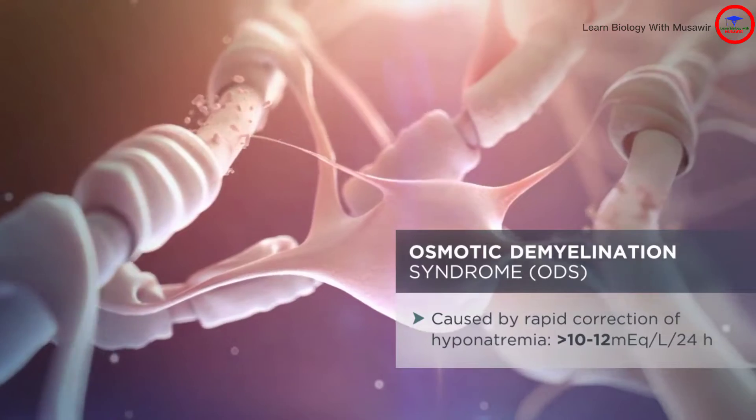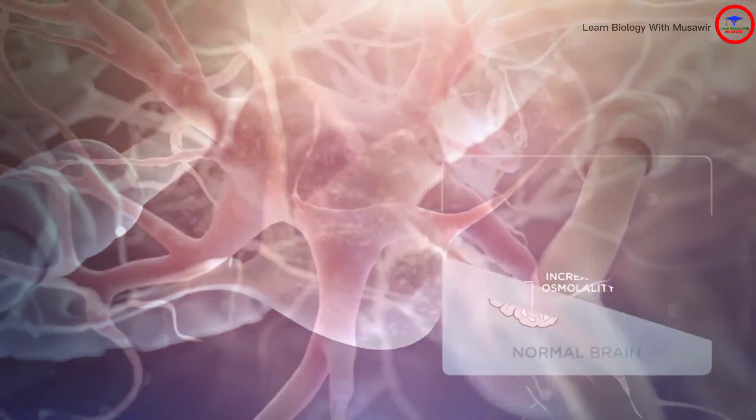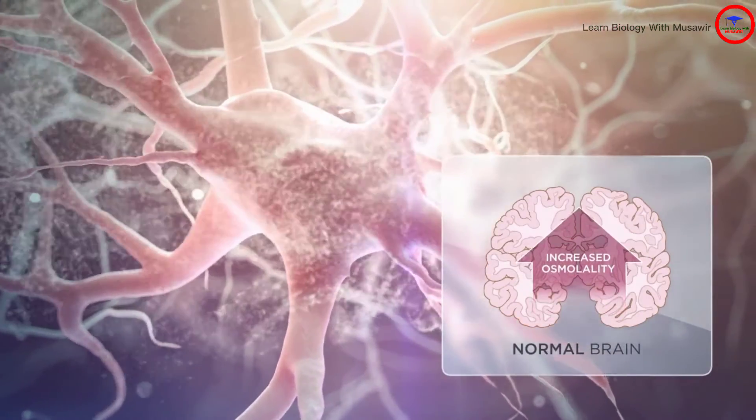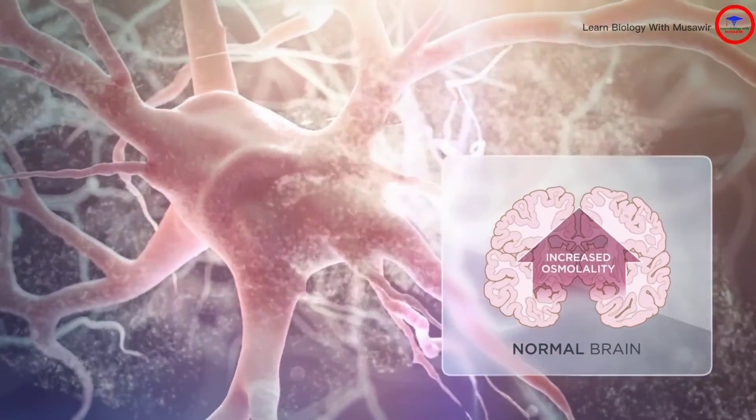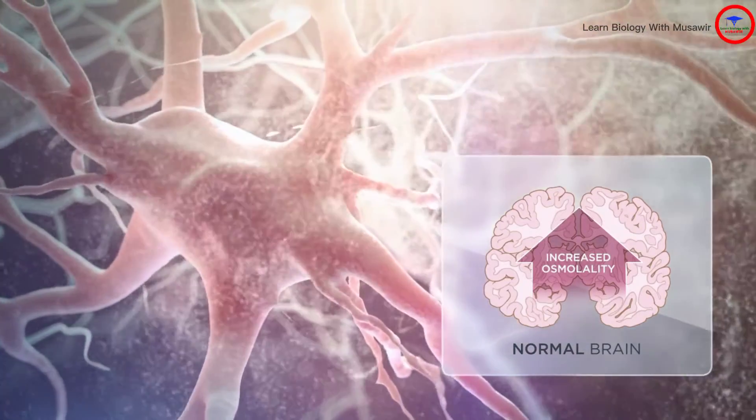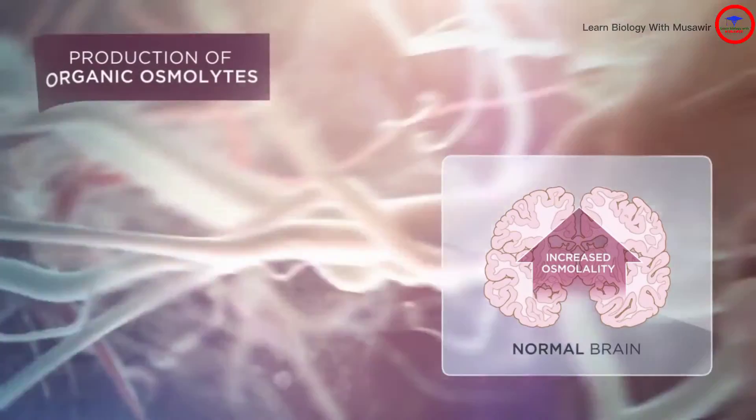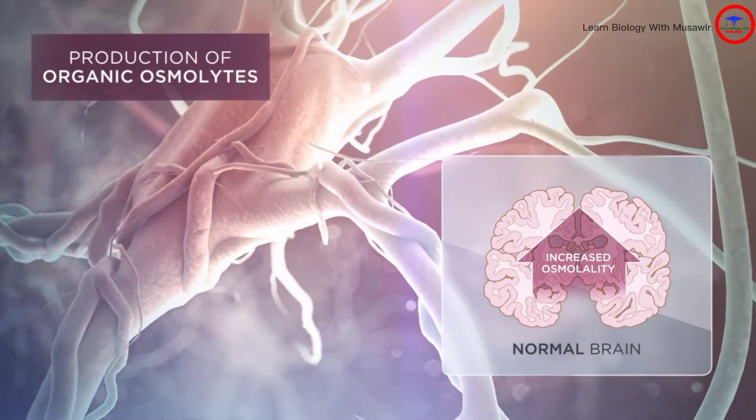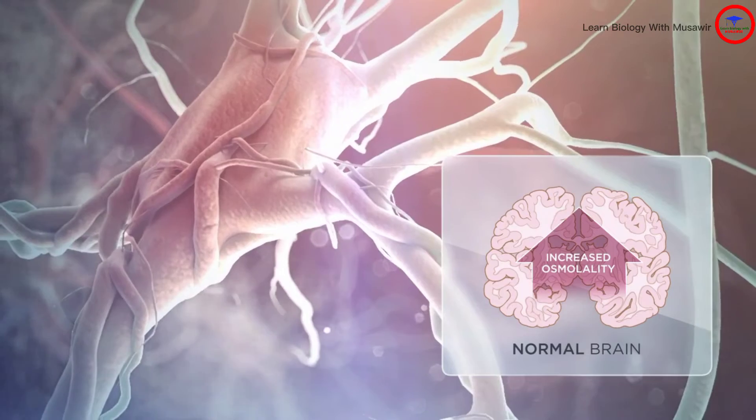In the context of rapidly increasing serum osmolality, glial cells in the brain will again try to restore balance, this time by increasing the production of organic osmolites and by increasing the intracellular and organic ion content.